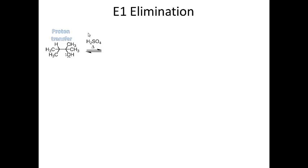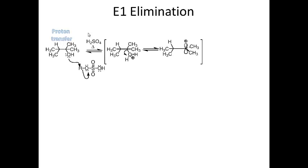Let's look at E1 — this is a classic example of an E1 elimination where I have an alcohol and treat it with a strong acid. What happens to the alcohol is that it gets protonated, so I do a proton transfer. Here's my acid — this is the structure of sulfuric acid — and I do proton transfer.